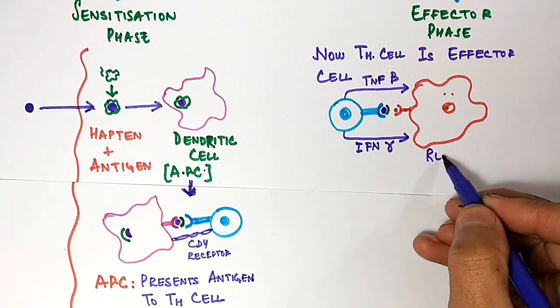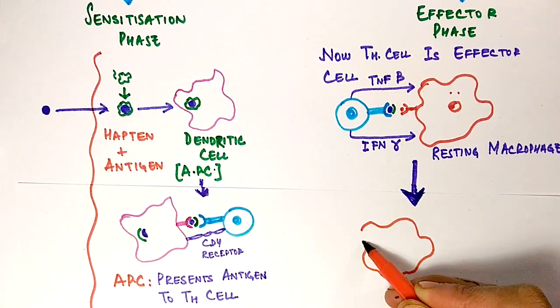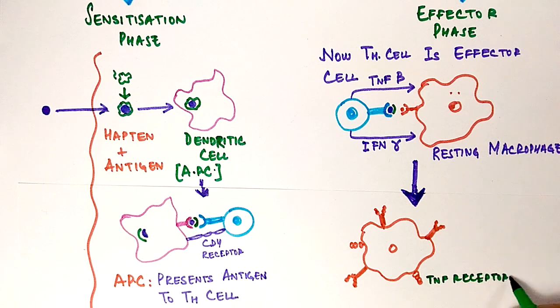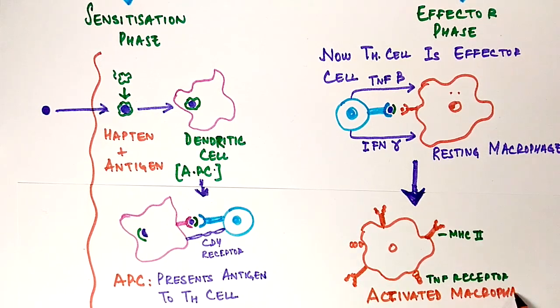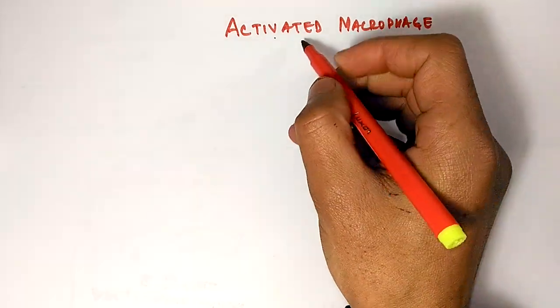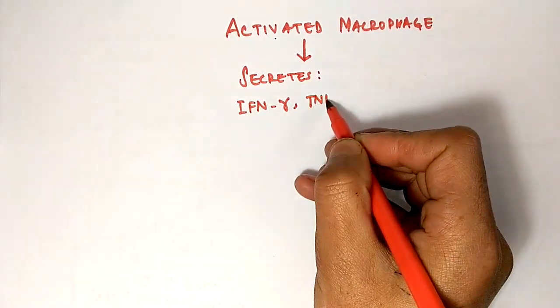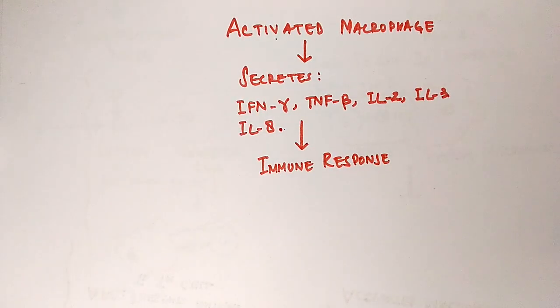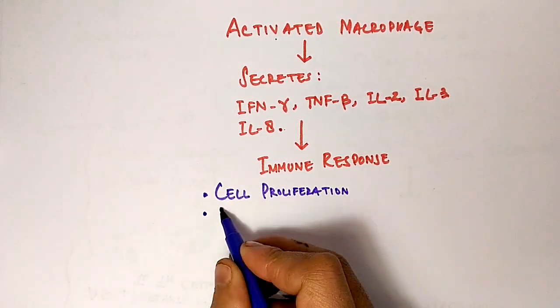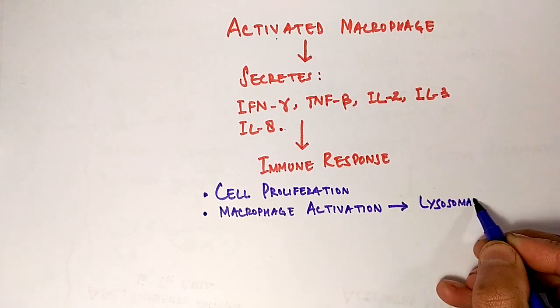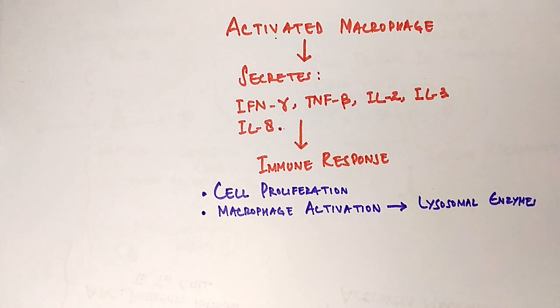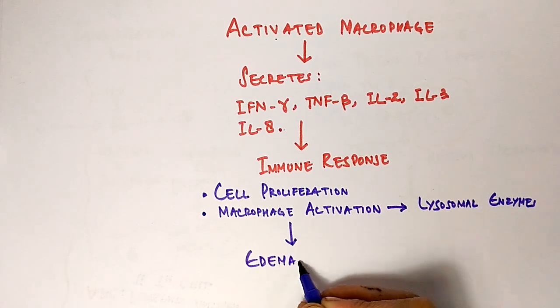Then we have this activated macrophage that can secrete cytokines and interferons which are able to create an immune response in the form of edema or redness. This activated macrophage secretes different types of cytokines: interferon gamma, interferon beta, interleukin-2, interleukin-3, and interleukin-8, which can create an immune response. Immune response in the form of cell proliferation, macrophage activation again and again, lysosomal enzymes release, and we have edema as well as redness.